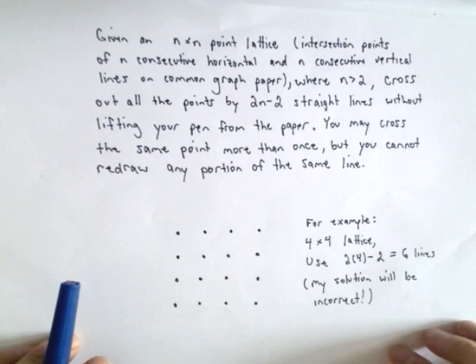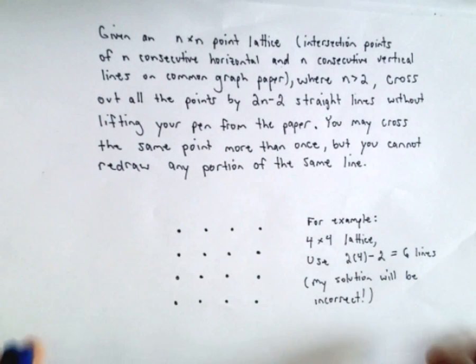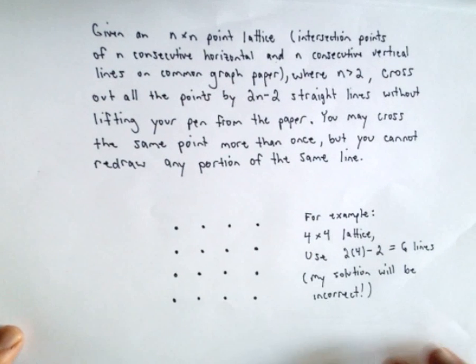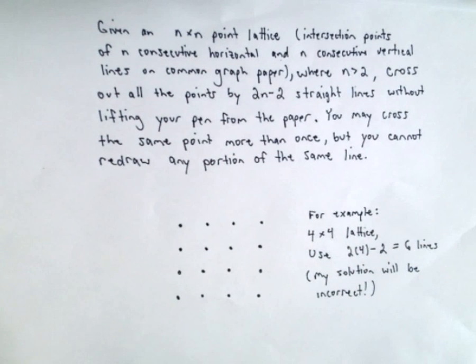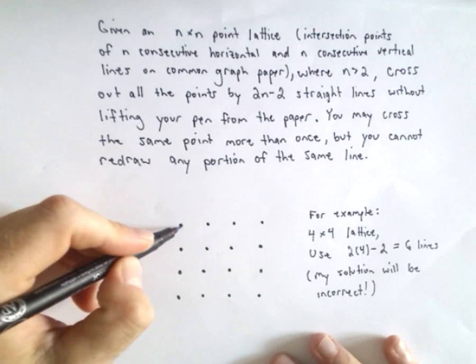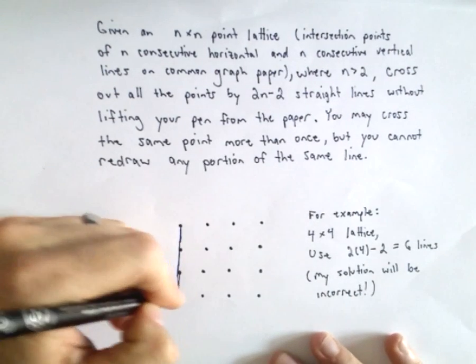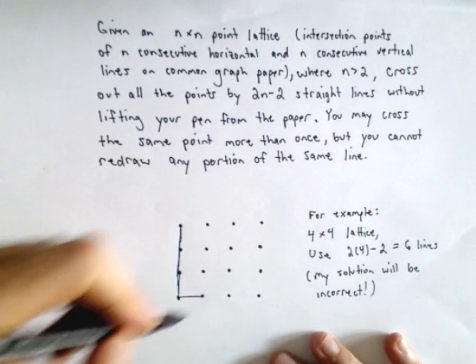So I'm going to show just an example. My solution's going to be incorrect because if I show you the correct solution, that kind of ruins the puzzle. So suppose we just kind of mindlessly just went down. So there's one line and then I go over, well, there's two lines.